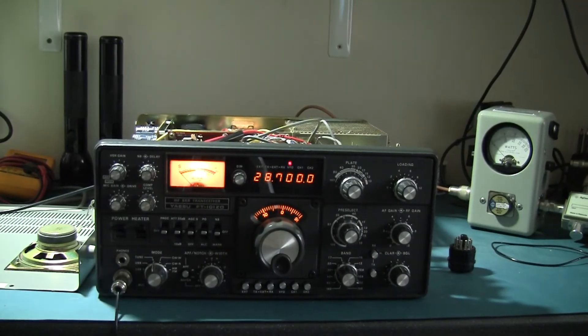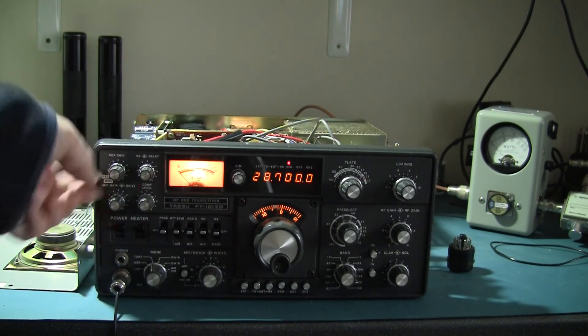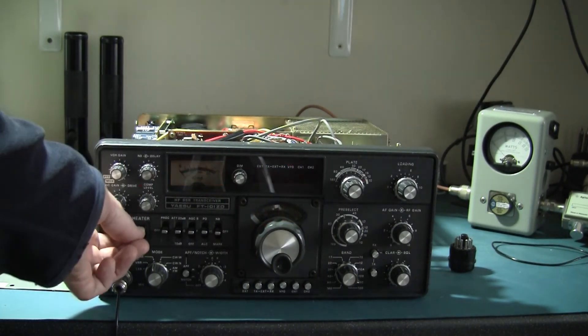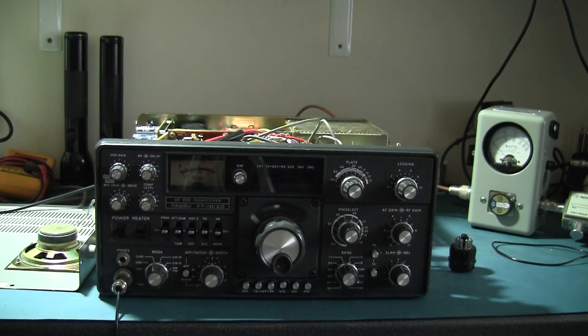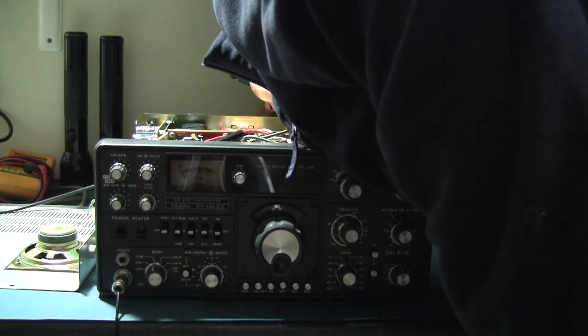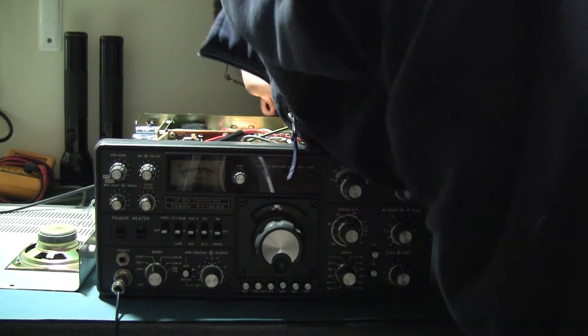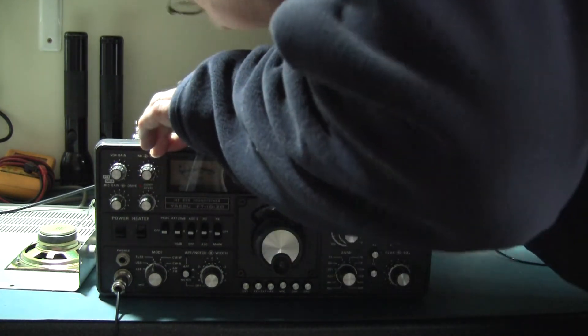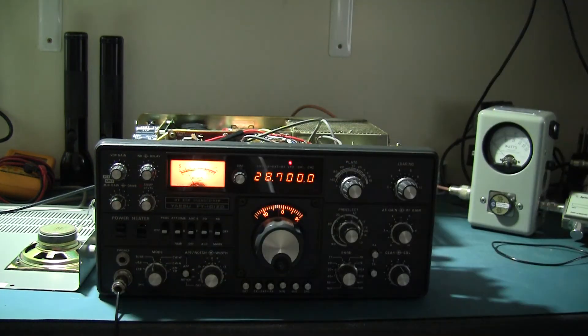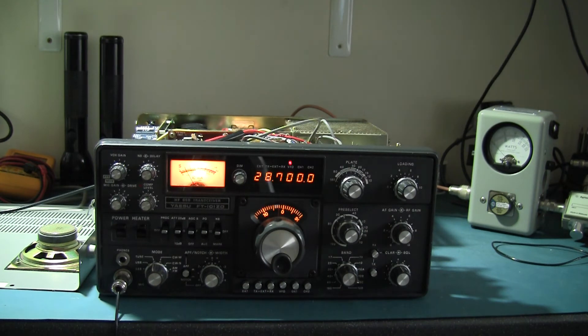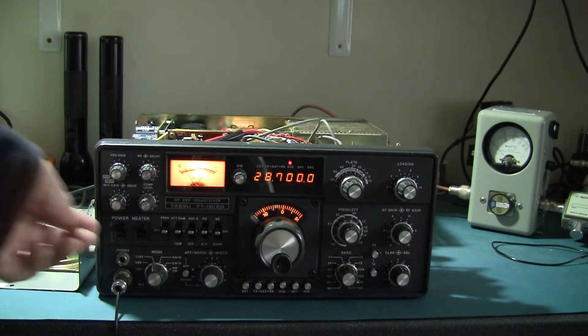So now what we do, we turn the radio off just for a second. Turn it all off to be sure. We'll take the accessory plug and plug it in the back. Turn it all back on again. That's applying heaters for the PA now.